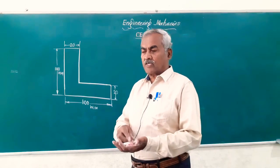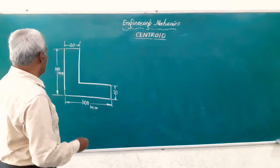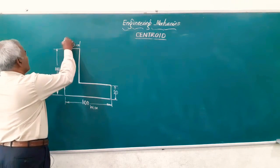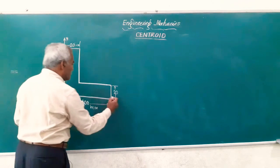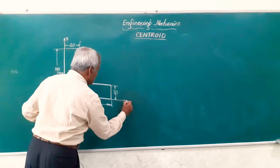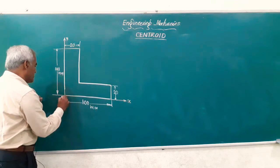Friends, here they are not specified the reference from where you have to find out. So, as usual we will take the left end as the y-axis here and the bottom line passing through the base as the x-axis and this becomes the origin O.